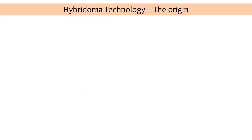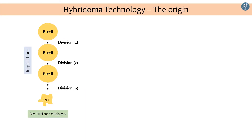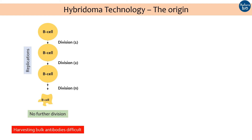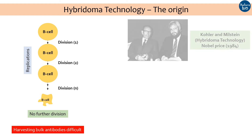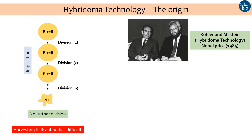One should remember that like most cells, B cells die after a few replications and are therefore mortal. So how do you harvest a large number of antibodies if the B cell producing your desired antibodies dies off? It seems impossible, but scientists Kohler and Milstein devised hybridoma technology to develop antibodies in large quantities with identical specificities against a target antigen or epitope.